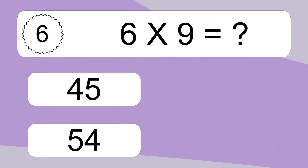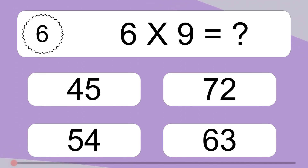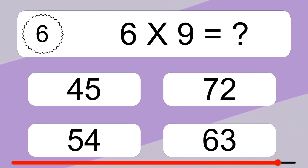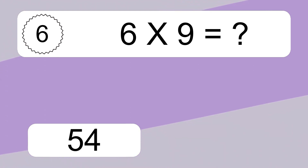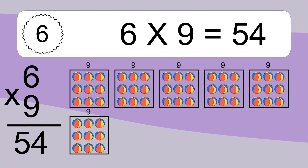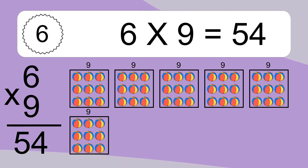6 times 9 equals what? 6 times 9 equals 54. We have 6 boxes, and each box has 9 colorful balls inside. If you count all the balls in all the boxes together, you will have 6 times 9 balls. This equals 54 balls.